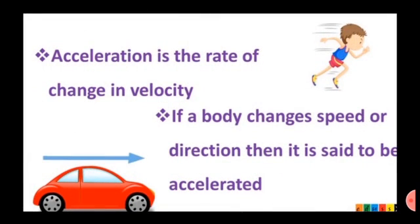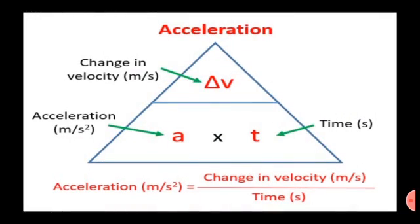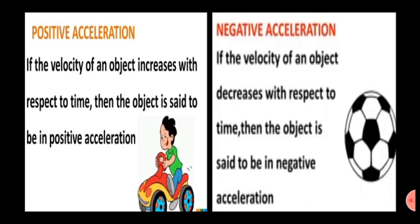Acceleration is the Rate of Change in Velocity. If a body changes speed or direction, then it is said to be accelerated. The formula for acceleration is: change in velocity divided by the time taken for that change. If the velocity of an object diminishes with respect to time, the object has negative acceleration.